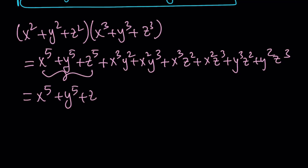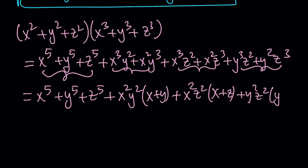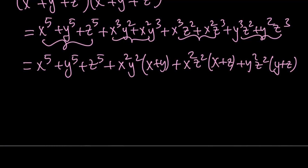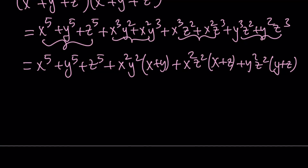Notice that x plus y plus z equals zero, so I can factor by grouping. I take out x squared y squared times (x plus y), plus x squared z squared times (x plus z), plus y squared z squared times (y plus z). Then I use the condition: x plus y can be replaced with negative z, x plus z with negative y, and y plus z with negative x.